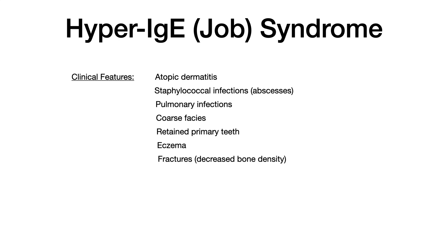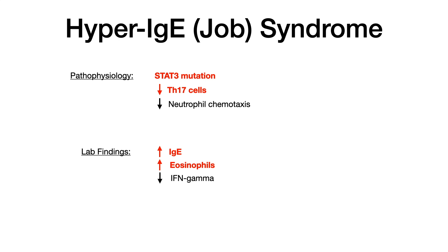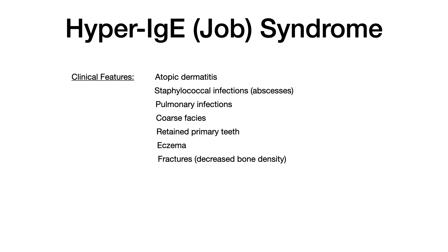Clinically in Job syndrome, you will see atopic dermatitis, increased staphylococcal infections (usually presenting as abscesses on your exam), pulmonary infections, coarse facies, retained primary teeth, eczema, and fractures due to decreased bone density. The STAT3 mutation plays a role in pleiotropic signaling, which explains the wide range of clinical features. The test writer will give you some of these features alongside high levels of eosinophils or high levels of IgE.